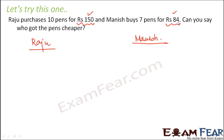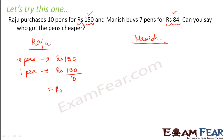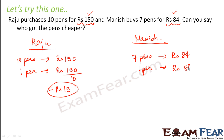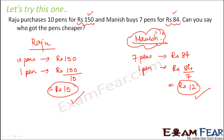Only then will it be a fair comparison. For Raju, the cost of 10 pens is rupees 150, so the cost of one pen is rupees 150 divided by 10, which equals rupees 15. Whereas for Manish, the cost of seven pens is rupees 84, so the cost of one pen is rupees 84 divided by seven, which equals rupees 12. Raju paid rupees 15 for one pen and Manish paid rupees 12 for one pen — so Manish got it cheaper.